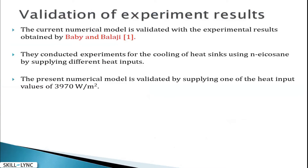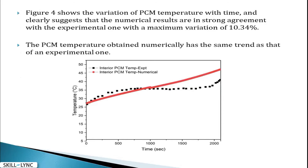To validate the numerical results, the simulation is compared against experimental data for the heat flux of 3970 W/m². There is a slight variation between the experimental (black line) and numerical (red line) curves of approximately 10%. This variation is accepted because experimentally some material is lost — for example, glue used for thermocouple mounting and heater installation, and some grooves broken during milling at the bottom. The maximum deviation is 10.34%.